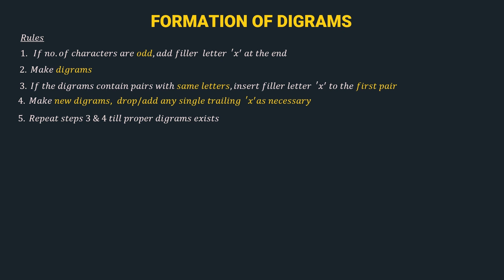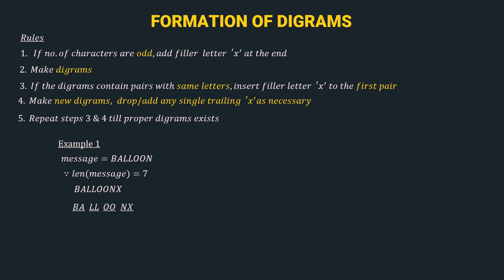Let's look at example 1 with the message 'balloon'. We will be making digrams of the message. Step 1: the length of 'balloon' is 7, which is odd, so we add filler letter X at the end — making it 'balloonx'. Step 2: make diagrams by pairing two letters at a time. We get: BA, LL, OO, and NX.